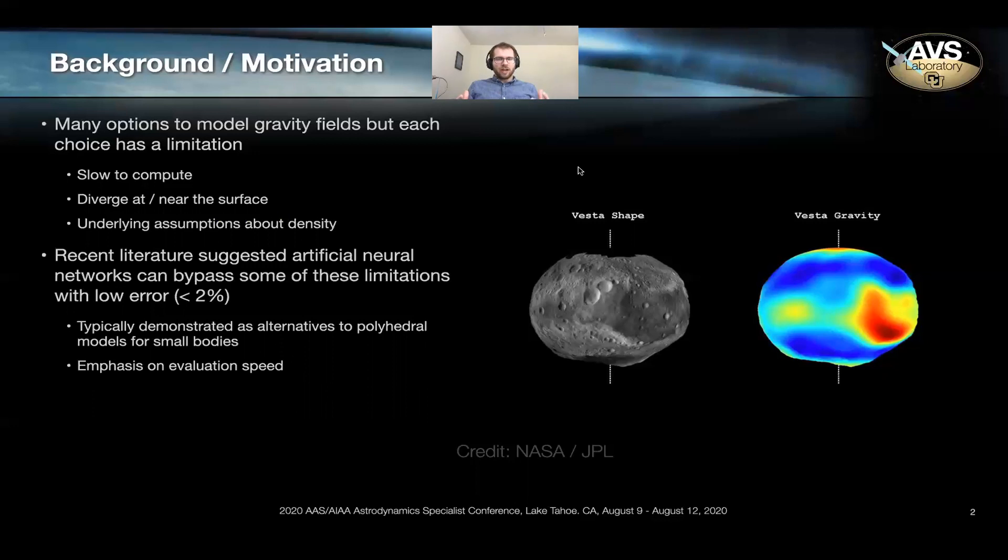It's a rich field with many options, but each option seems to have its own disadvantage. Some can be slow to compute. Others can diverge at or near the surface of your body and others assume homogenous density.